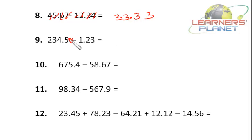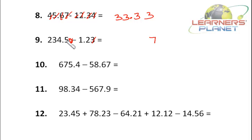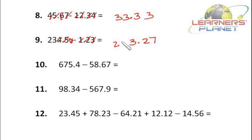Now let's do this problem. I put a zero here. Now 0 minus 3 — I cannot write minus 3 as such, so I borrow 1 from the next position and write 10 minus 3 is 7. Now I have a negative 1 to settle: 5 minus 1 is 4, 4 minus 2 is 2. I put a decimal, then 4 minus 1 is 3, and 23 remains as it is. The final answer is 233.27.